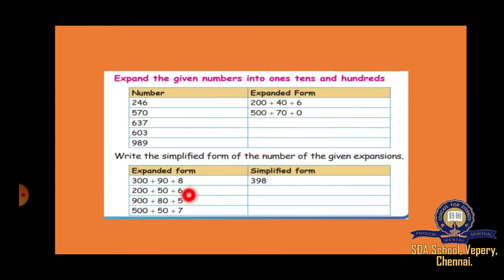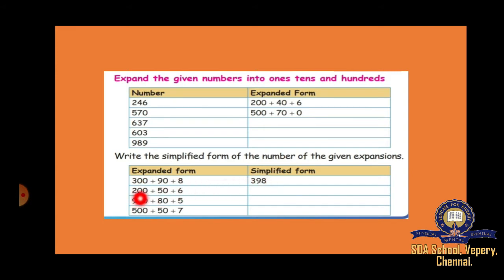Now, expanded form to simplified form. I will give the expanded form and you write the number. For 300 plus 90 plus 8, the answer is 398. For 200 plus 50 plus 6, the answer is 256. Like this you have to write.